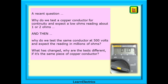The question that was asked was: why do we test a copper conductor for continuity and expect a low ohms reading of about one or two ohms, and then why do we test the same conductor at 500 volts and expect the reading in millions of ohms? What has changed? Why are the tests different if this is still the same piece of copper conductor?